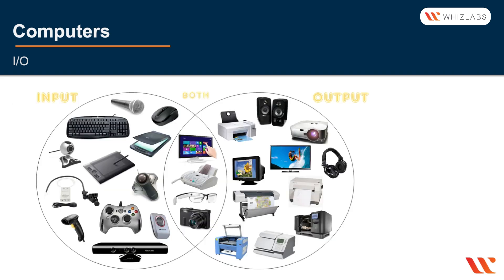Here you can see more clearly what the input and output devices are. Some of these can overlap and do both input and output. For example, a touchscreen is both an input and output device — you can send it commands by touching it, and you also receive output on its display.